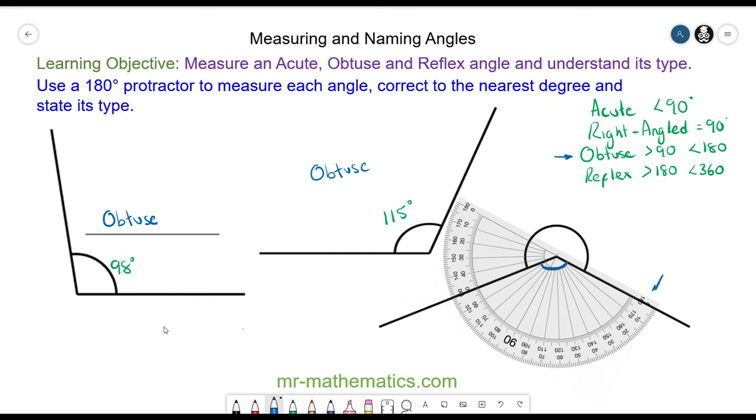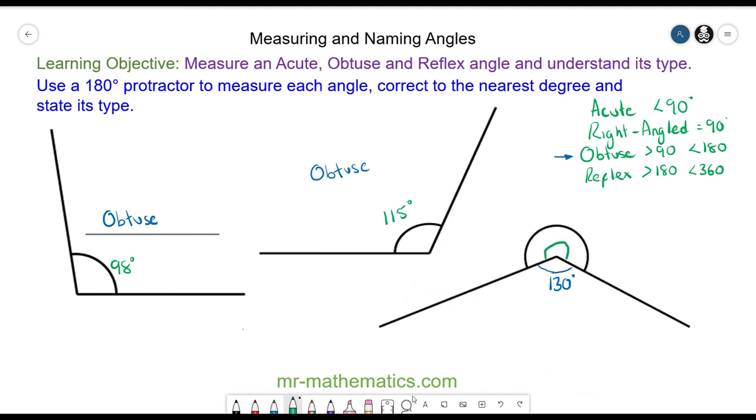So I am going to use the top scale and I am going to work it around past 90 in a clockwise direction to 130 degrees. So the blue angle is 130 degrees. So this angle will be 360 take away 130 which is 230 degrees, which makes it a reflex angle.